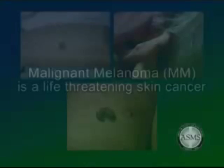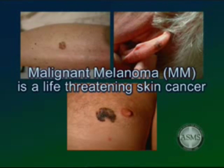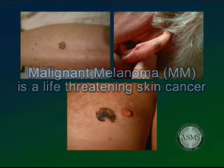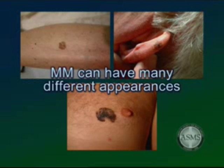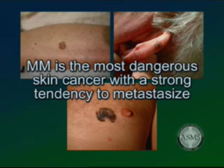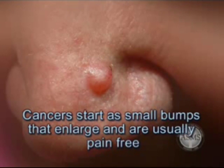Malignant melanoma (MM) is a life-threatening skin cancer that develops from the pigment-forming cells in the skin. It often presents as a black or brown mole and can also include other irregular colors such as red, white, blue, and gray. Malignant melanoma is the least common of the three types of skin cancers, but it is the most dangerous because it has a strong tendency to metastasize to distant organs.